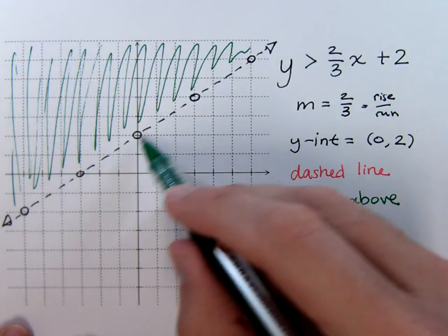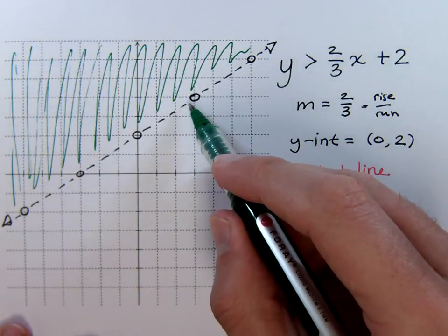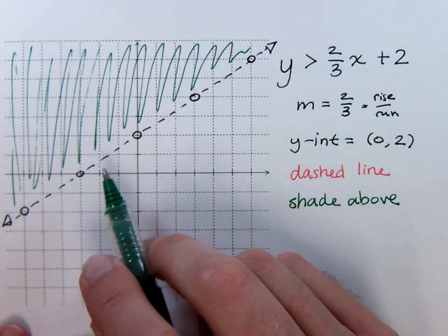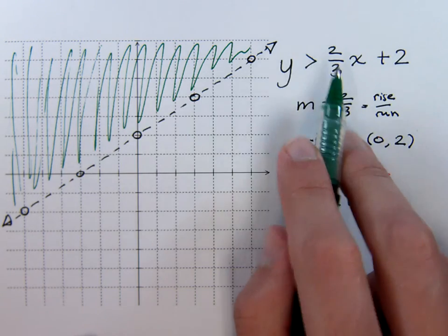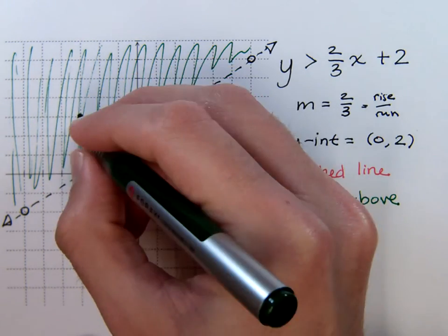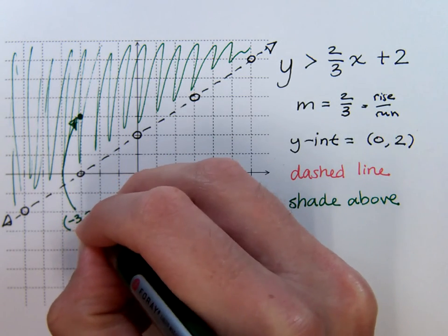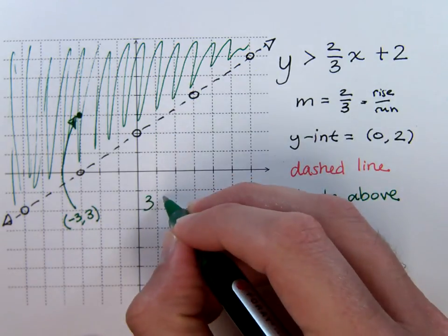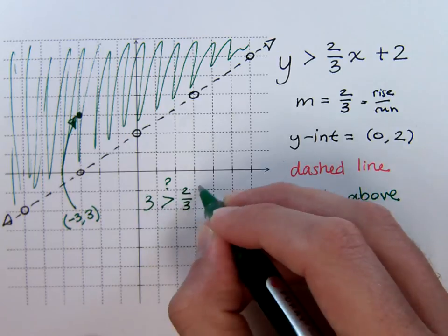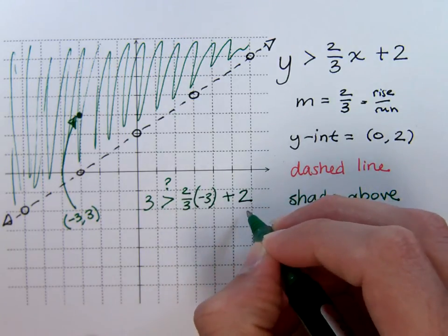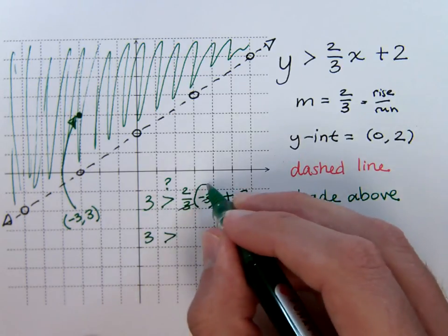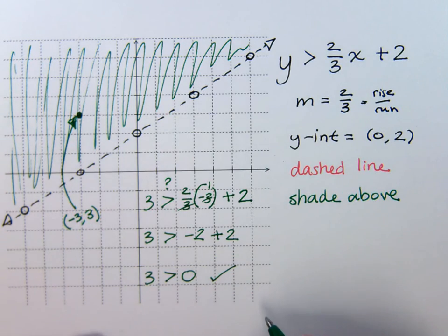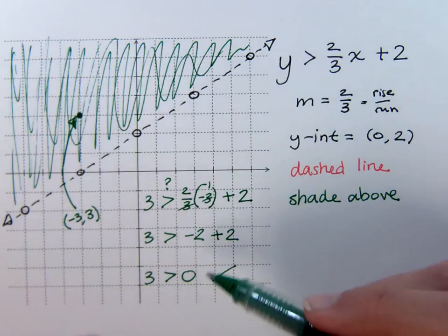All of this up here will represent our solution. We can get as close to this line as we want, but we cannot actually include any point on it. If it were greater than or equal to, then this would have been a solid line and we would have included that. Any point in the shaded region will satisfy this inequality. Take for example the point negative three, positive three. Plugging in: is three greater than two-thirds times negative three plus two? When we do the math, we see that yes, three is greater than zero — a true statement. So anything in that region is a solution.